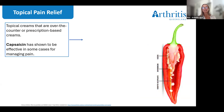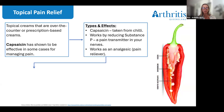The next topic is topical pain relief creams. These include over-the-counter and prescription-based creams. Capsaicin cream has been shown in research and trials to be effective in some cases for managing pain. Capsaicin is derived from chili peppers and works mainly by reducing Substance P — a pain transmitter in our nerves involved in transmitting pain impulses from nerve endings near our skin and joints to the brain. By reducing Substance P, it can help reduce the pain we feel, and it has been used to help with peripheral nerve pain.